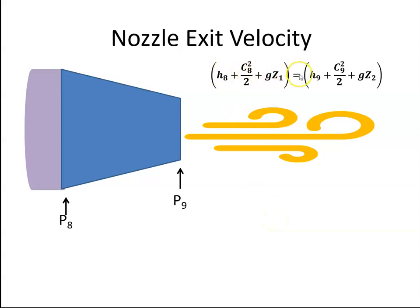So that is the steady state energy equation. It's just saying that the enthalpy and kinetic energy and potential energy at this point is equal to the enthalpy, kinetic energy and potential energy at this point.